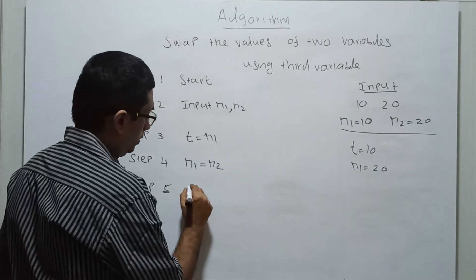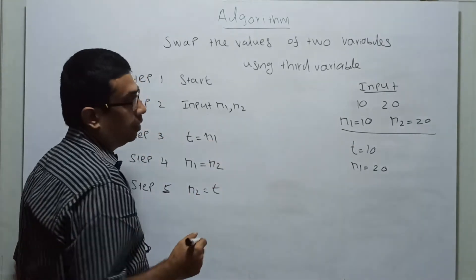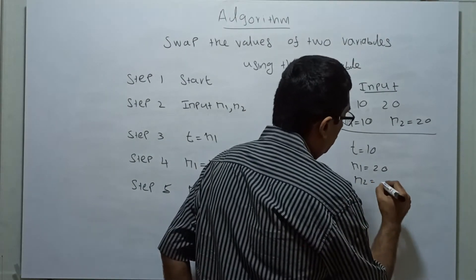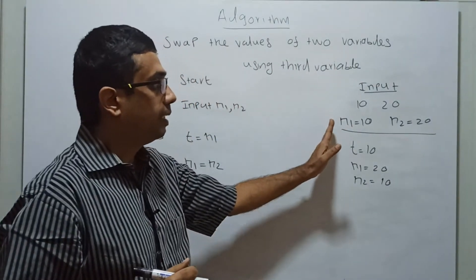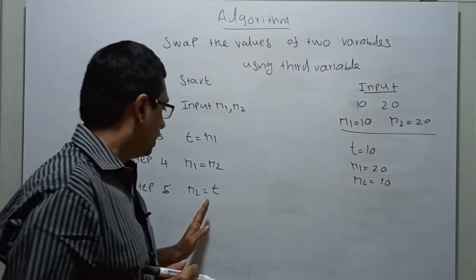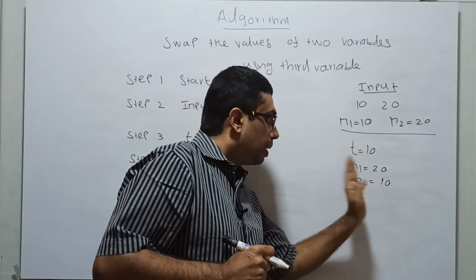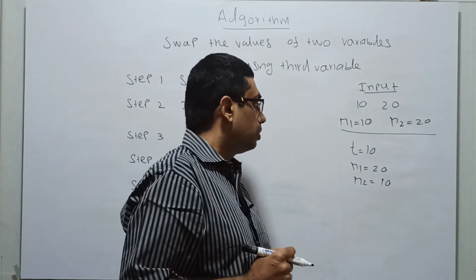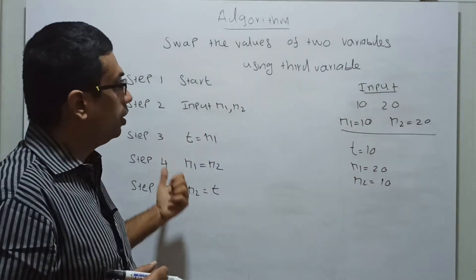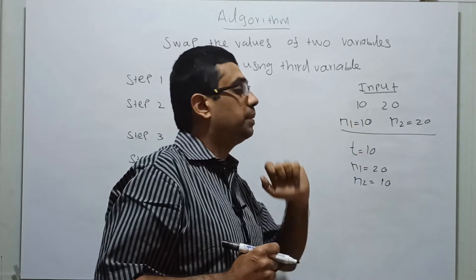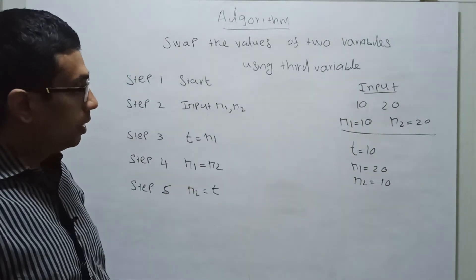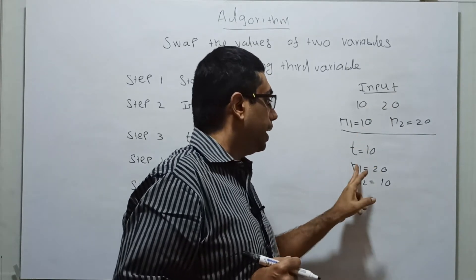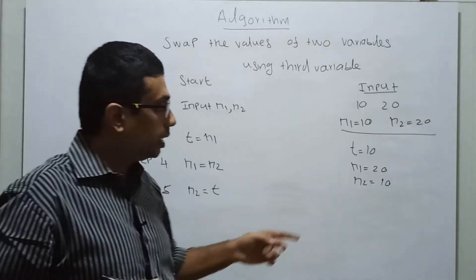Step 5: n2 = t. The value of t is 10, so 10 is now assigned to n2, making n2 equal to 10. So the initial values were n1=10 and n2=20. By assigning n1 to t, then n2 to n1, then t to n2, the values are swapped using the temporary variable t.